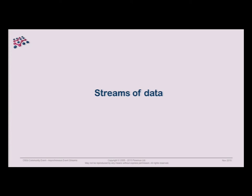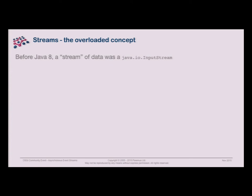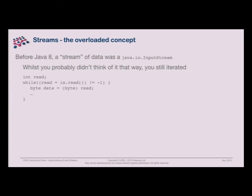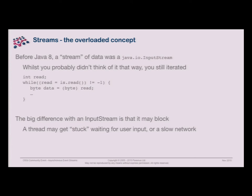But that's streams as a collection type. What if we're dealing with real data? Before Java 8, when people talked about a stream, they typically meant an InputStream or OutputStream. You still iterated over it — this looks quite a lot like an iteration loop. The big problem is that an InputStream may block. With a collection iterator, 'hasNext' has a value for you right now. But with an InputStream, you can get a thread stuck waiting for user input — genuinely stuck if it's waiting for a keyboard on a machine that doesn't have one. NIO does give you non-blocking input, but it's a lot harder to use than streams.